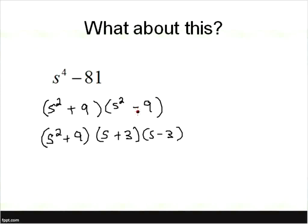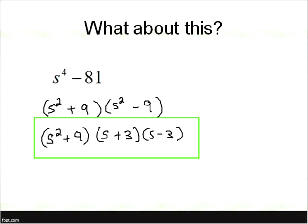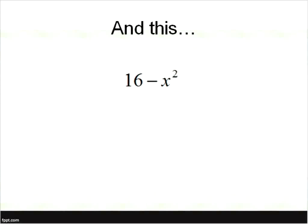We need to be careful when you have a perfect square minus a perfect square that you factor it completely. Looking at our last factor — s minus 3 — is that a perfect square minus a perfect square? Not at all. So this one is factored down to its simplest form. This example took one more step, but it's just doing the same exact thing.